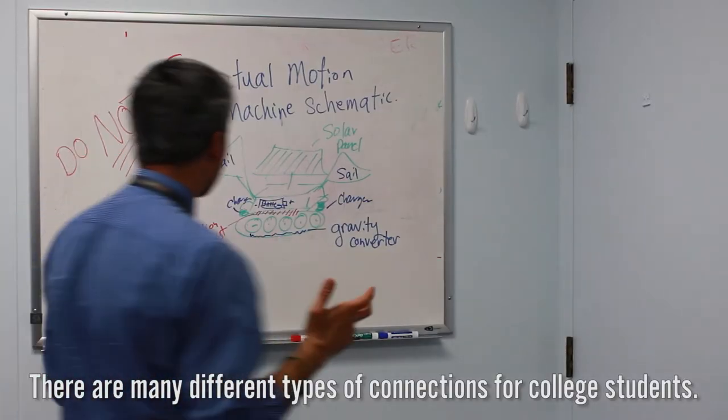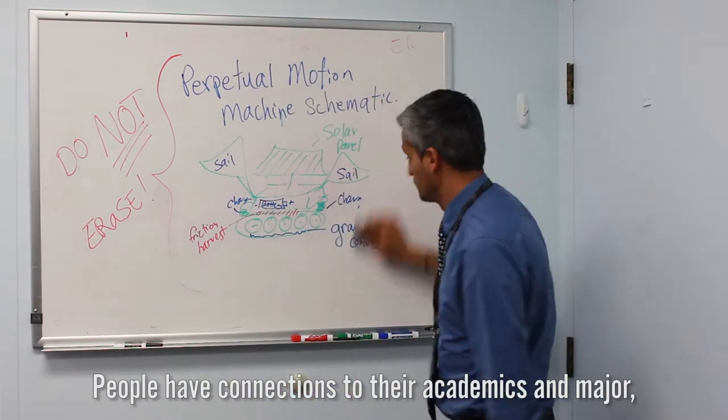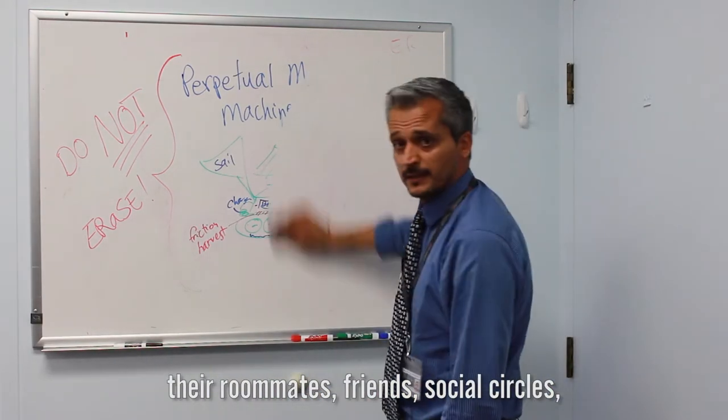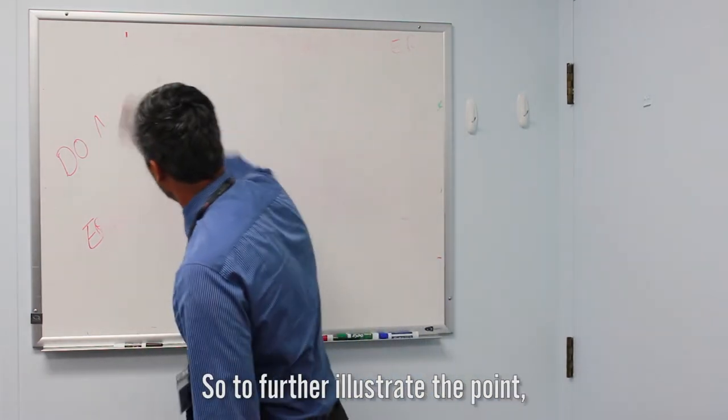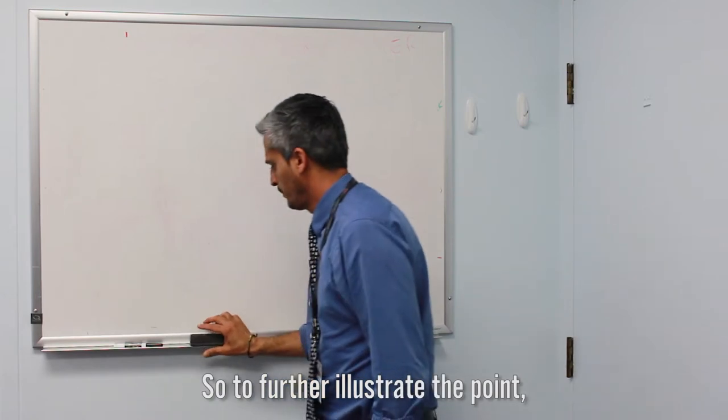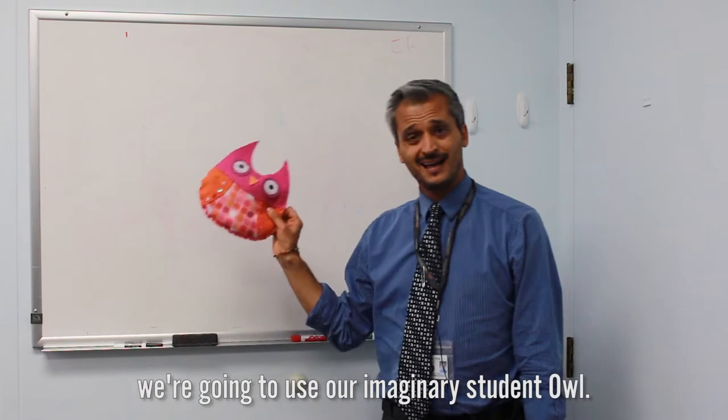There are many different types of connections for college students. People have connections to their academics and major, their roommates, friends, social circle, their hobbies and interests. So to further illustrate the point, we're going to use our imaginary student owl.